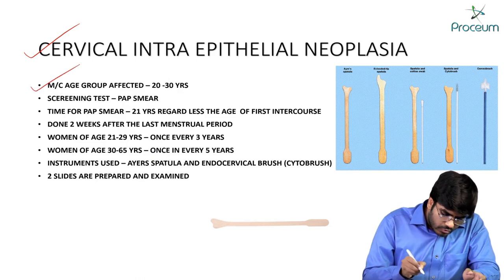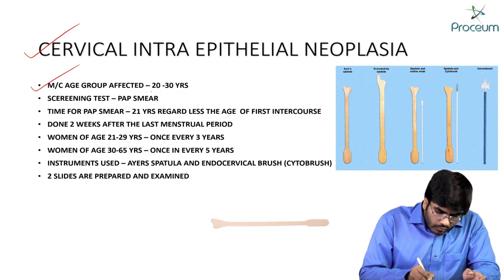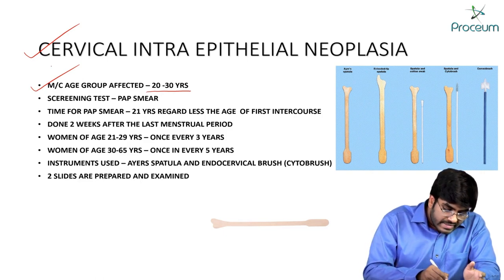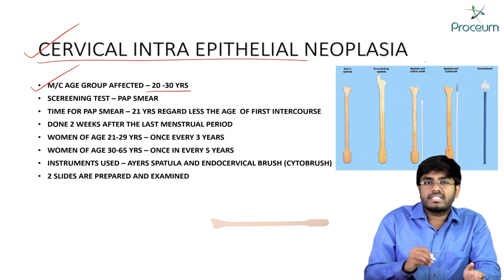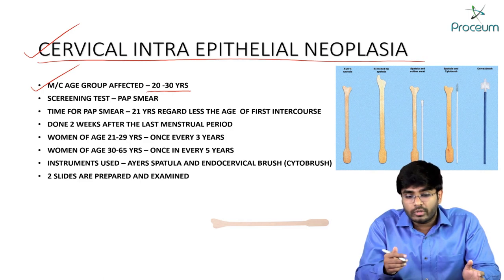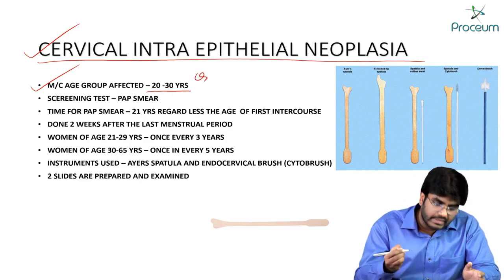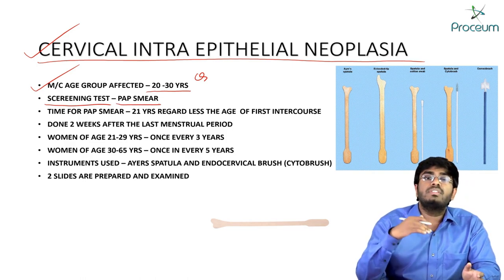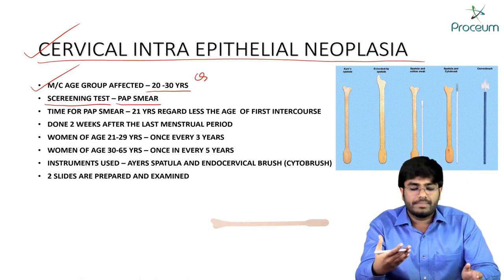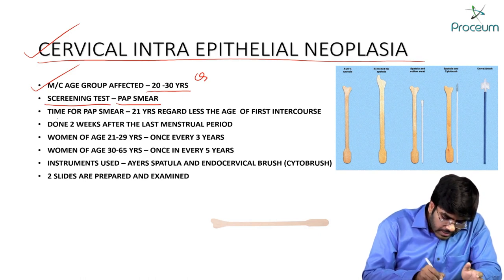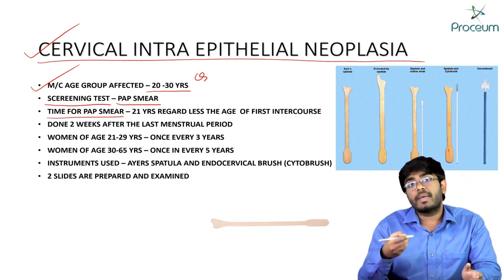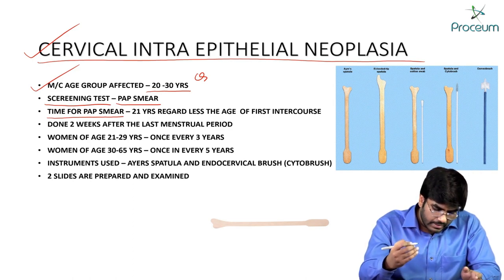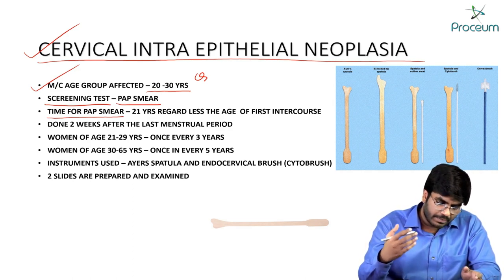The most common age group affected by CIN is 20 to 30 years. The screening test we perform is the Pap smear. For a female, the time to start Pap smear is at 21 years — regardless of the age of first intercourse. From 21 years onward, we do Pap smear to rule out CIN, giving us a window period to prevent progression to cervical cancer.